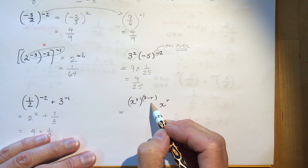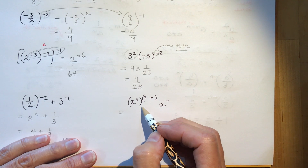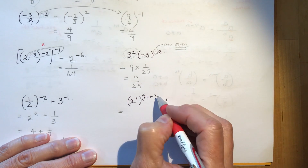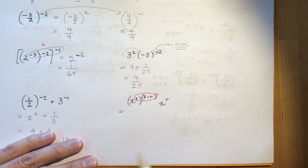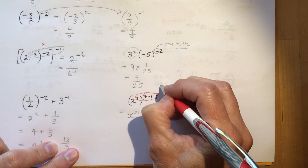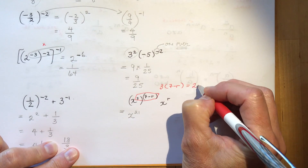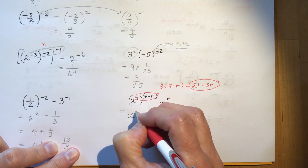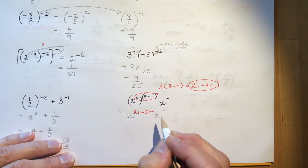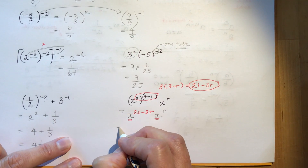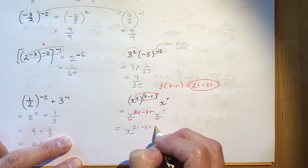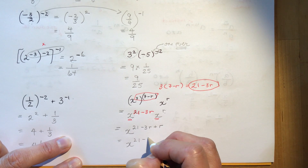Now a more difficult question with variable exponents. I have x cubed to the power of seven minus r. Power to a power means multiply: three times seven minus r equals twenty-one minus 3r. That's my exponent, giving x to the twenty-one minus 3r, and I still have x to the r. Bases are the same, so adding the exponents when multiplying gives x to the twenty-one minus 3r plus r, which is x to the twenty-one minus 2r.